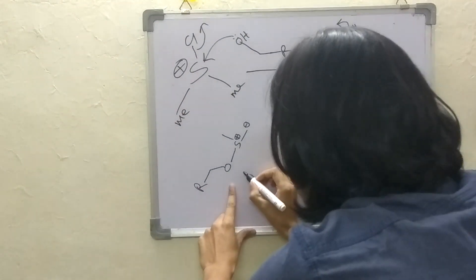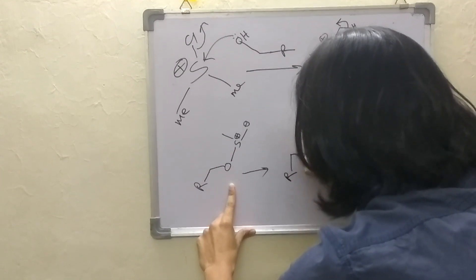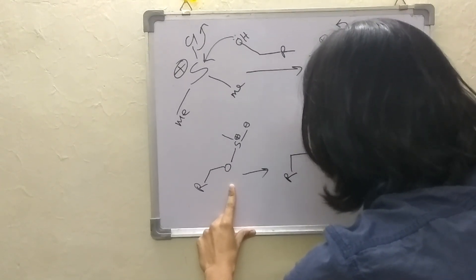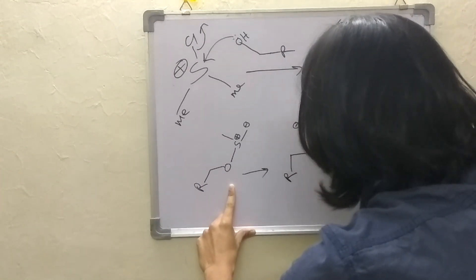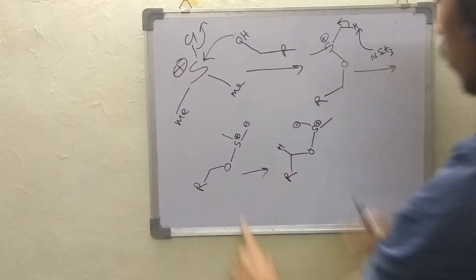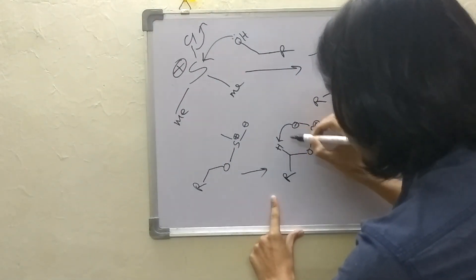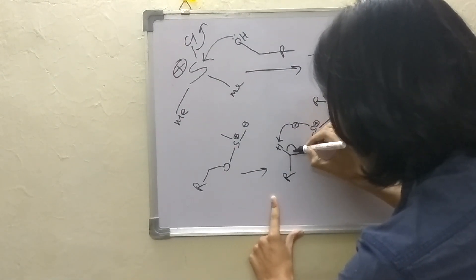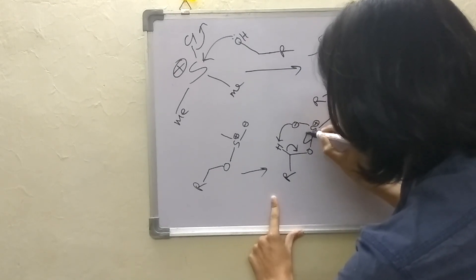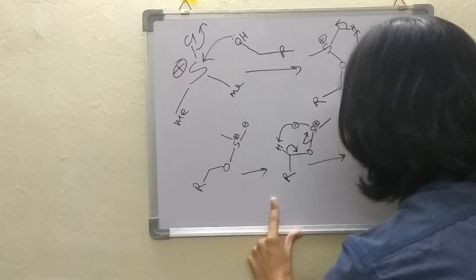This is like a ylide and this negative charge is stabilized here. Now what can happen - so basically this is negative, this is positive and we have a group there and there is a hydrogen over there. So this negative charge can take this hydrogen and this bond will go here and it will go there.